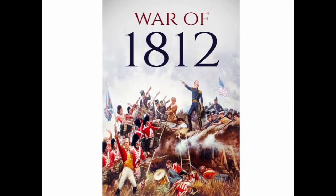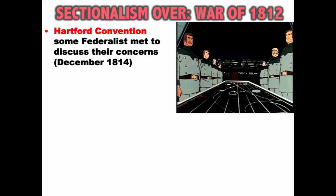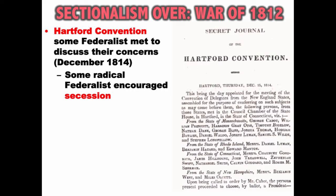You could even see sectional division during the War of 1812. The vote declaring war on England revealed sectional tension because opposition to the declaration of war came largely from the North, very strongly amongst members of the Federalist Party. The North heavily traded with England — many of them were merchants who preferred not to have a second conflict with Great Britain. Things got a little crazy during the Hartford Convention when some Federalists met to discuss their concerns in December of 1814. Some radical Federalists encouraged secession, a precedent later used by the South.